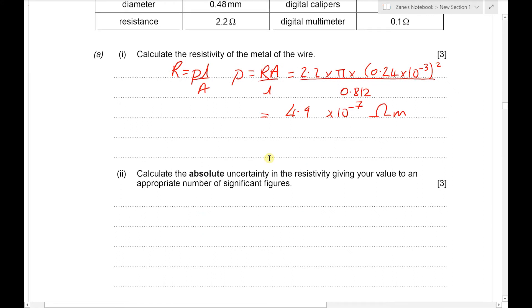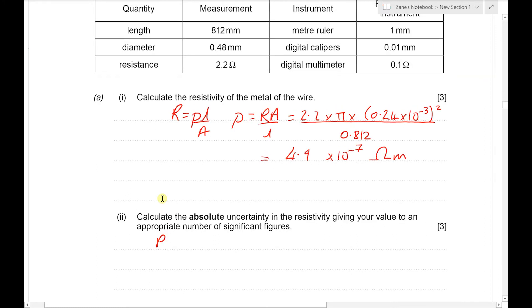Next we're going to calculate the absolute uncertainty in the resistivity given your value to an appropriate number of significant figures. So let's do this in lots of steps. So first of all I'm going to work out the percentage uncertainty in the length.